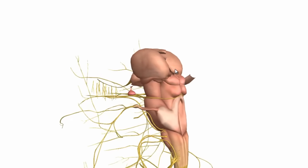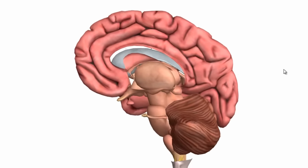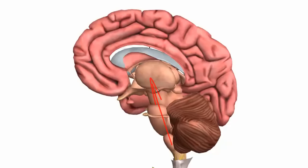The thalamus is a really important structure because it essentially acts as a switchboard or gateway to the cerebral hemisphere. It relays connections to the cerebral cortex and contains lots of nuclei. The thalamus sends and receives fibres from the cortex through thalamocortical loops and reciprocal connections. It's important in sleep and wakefulness, coordinating information from sensory systems, and has links to the basal ganglia and the cerebellum.